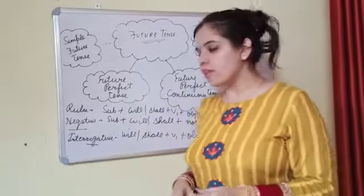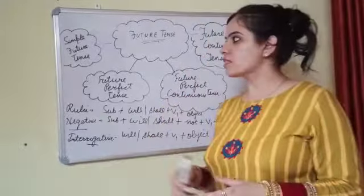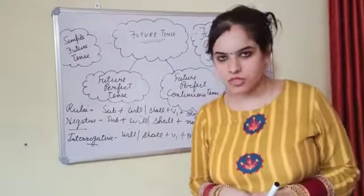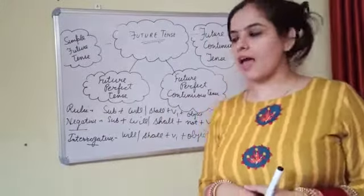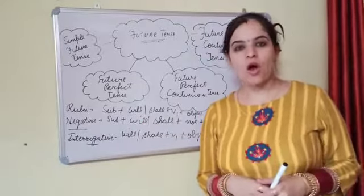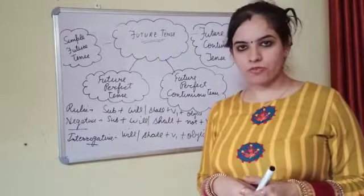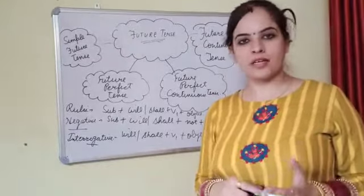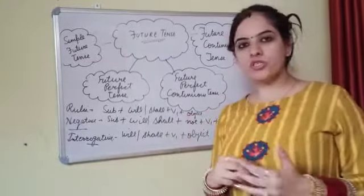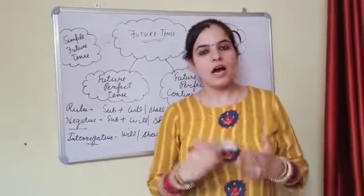And then we discussed the rules. First of all, we discussed the rule of the simple future tense, and the rule is: subject plus will or shall plus verb first form plus object. Verb first form is also known as the root form of the verb.